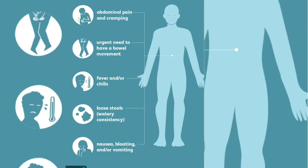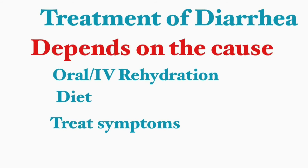Diarrhea may present with associated symptoms such as abdominal pain and cramping, fever and chills, nausea and bloating, or vomiting. So look out for these associated symptoms.